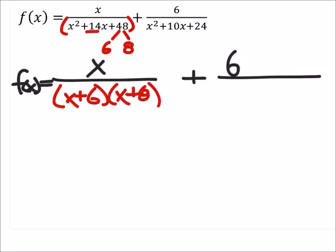So let's go ahead and add this to the other fraction, which is 6 over this polynomial. So if I can find two factors of 24 that add up to 10, then we should be in great shape. And the two that come to my mind are 4 and 6. So I got x plus 4 and x plus 6.